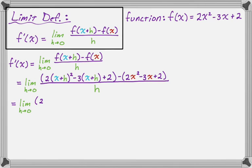It's going to be 2(x² + 2xh + h²). Then I distribute negative 3, so minus 3x minus 3h, and then plus 2. Now we distribute the negative to everything from f(x): minus 2x² plus 3x minus 2. All divided by h.